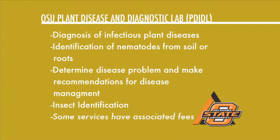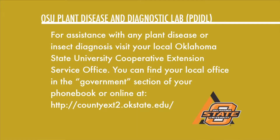People can send in samples, including household insects if they just need identification, and there's a strong focus on plant problems. When someone identifies a problem with their plant or has an insect they want identified, the best first step is to take it to their county extension office.